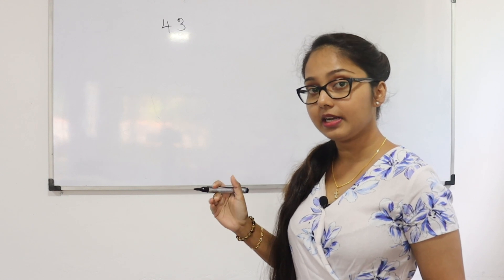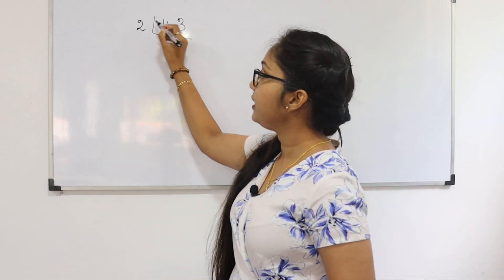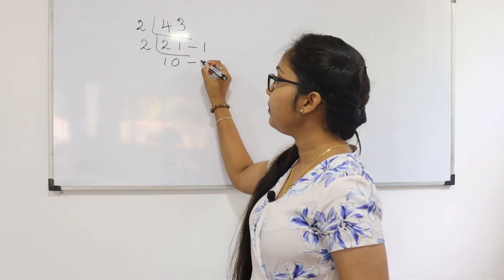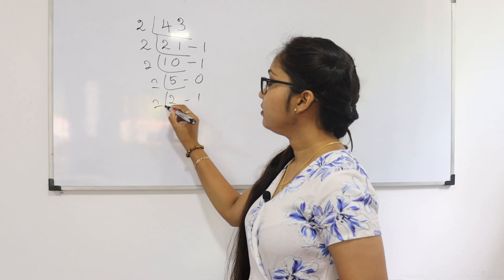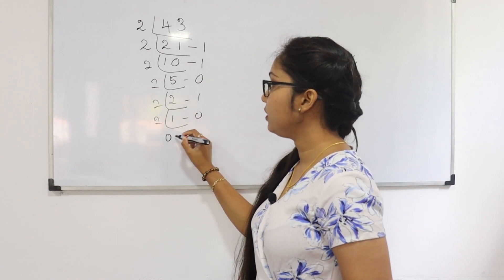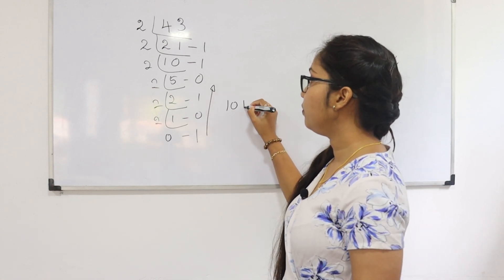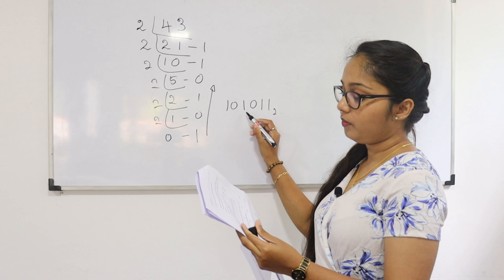Question number 15: Which of the following is equivalent to the decimal number 43? To convert 43 to binary: 43 ÷ 2 = 21 remainder 1; 21 ÷ 2 = 10 remainder 1; 10 ÷ 2 = 5 remainder 0; 5 ÷ 2 = 2 remainder 1; 2 ÷ 2 = 1 remainder 0; 1 ÷ 2 = 0 remainder 1. Reading remainders bottom to top: 101011 — the answer is 101011 base 2. Answer number 2.